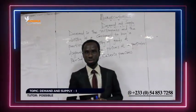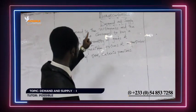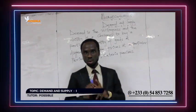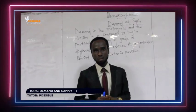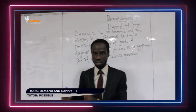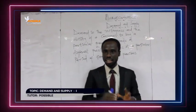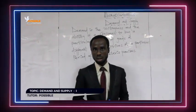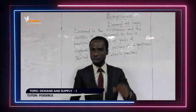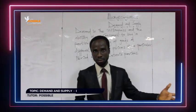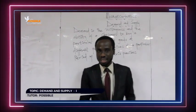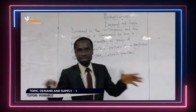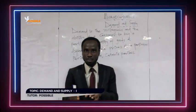My name is Possible and I'll be your tutor for today. Today we are going to look at microeconomics, which is demand and supply. Demand and supply is a very key concept in economics. Under microeconomics, we call them market forces. They are market forces in the sense that they control the markets, and these market forces can never be seen — they are known as the invisible hands of the market.